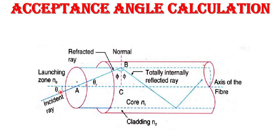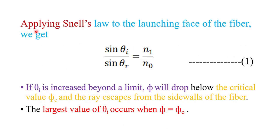If we increase the incident angle theta i, phi also increases and total internal reflection takes place. So theta i equals theta i maximum for total internal reflection at the core-cladding interface. Applying Snell's law at the launching face: sin(theta i) / sin(theta r) = N1 / N0, where N1 is the refractive index of core and N0 is the refractive index of the outer medium (air). This is equation number one.